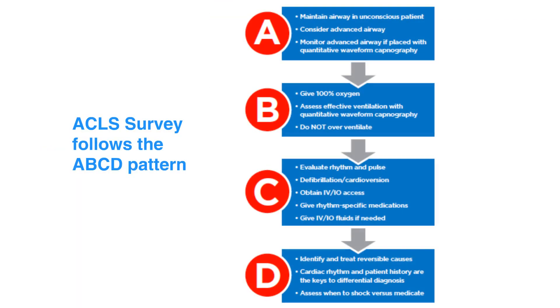The ACLS survey follows the ABCD pattern in which you check for airway, breathing, circulation, and differential diagnosis. Refer to Figure 21 in your corresponding ACLS manual to further learn about the ACLS survey.